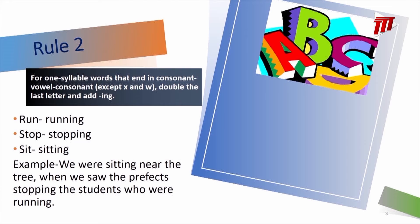Rule two: for one-syllable words that end in a consonant-vowel-consonant pattern, except where the word ends in the letters X and W, we double the last letter and add ING. The word 'run' — R-U-N — we have the consonant R, followed by the vowel U, and the consonant N. So we double the N and then we add ING to produce 'running': R-U-N-N-I-N-G.